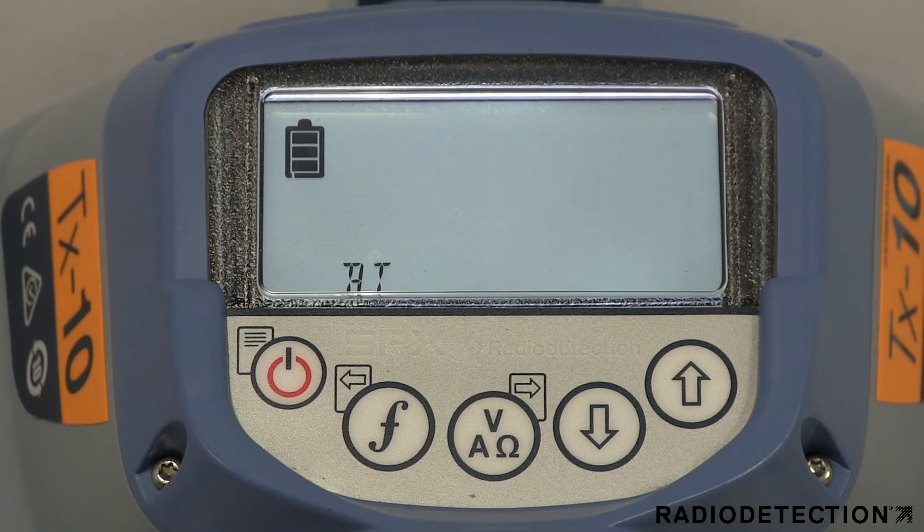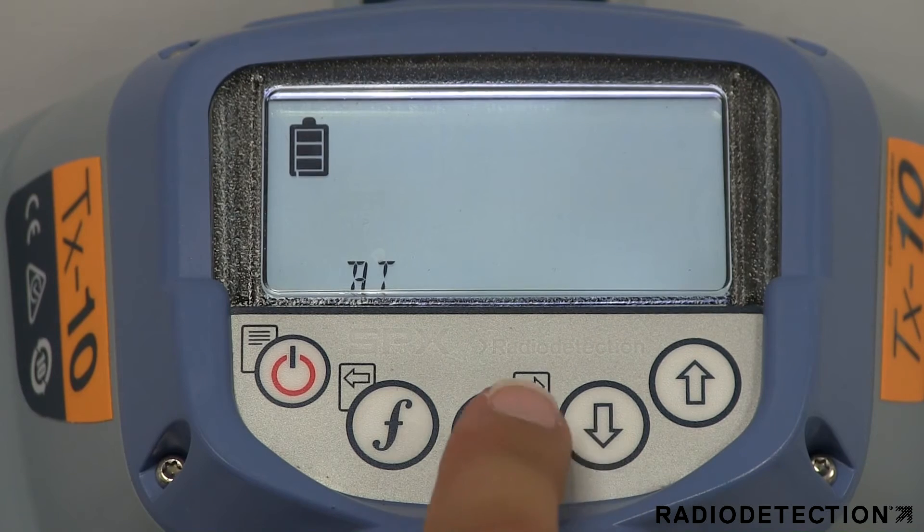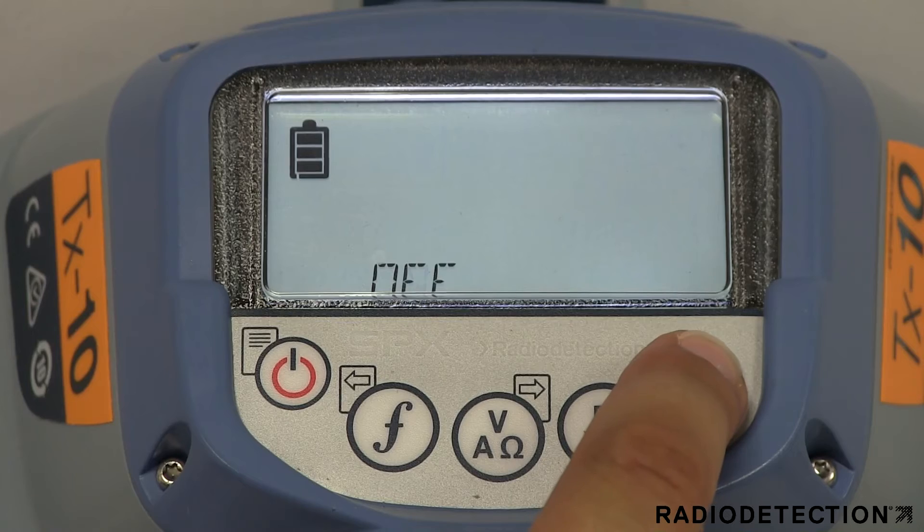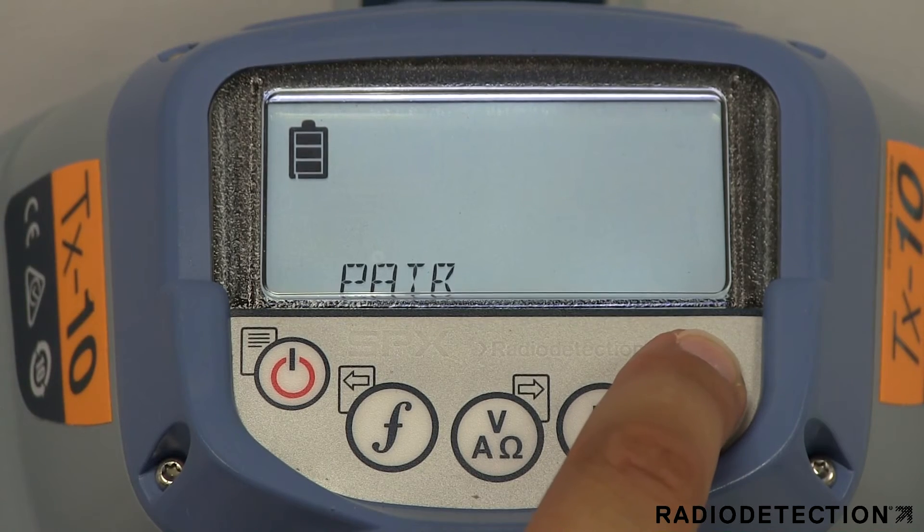The next menu option available is Bluetooth, which is displayed on the screen as BT. In this menu, you have four options: on, off, pair and reset.